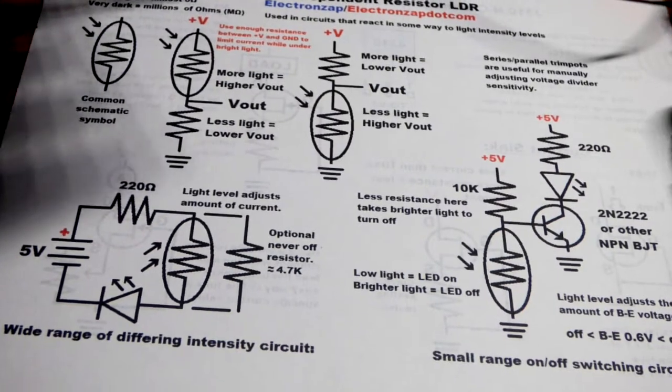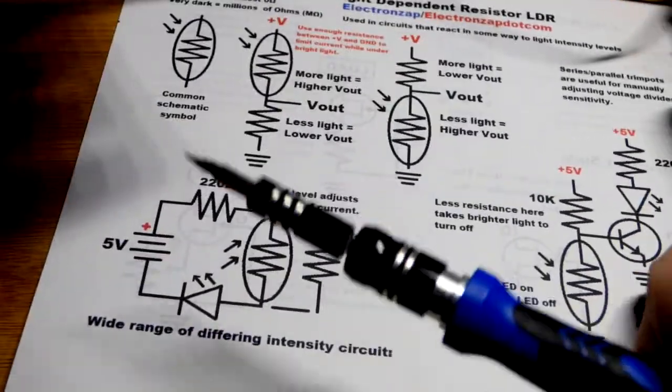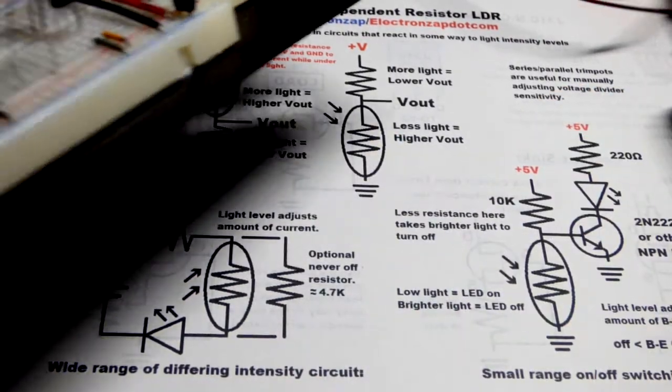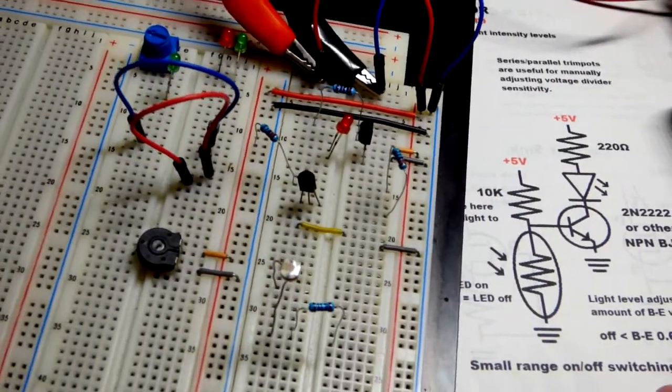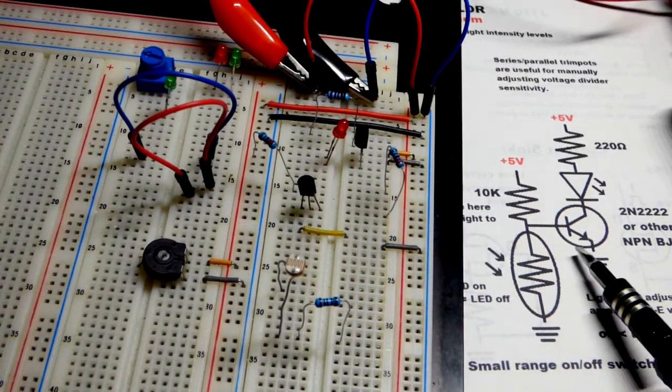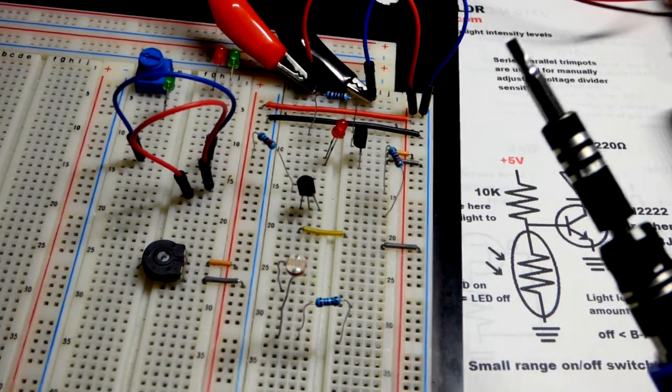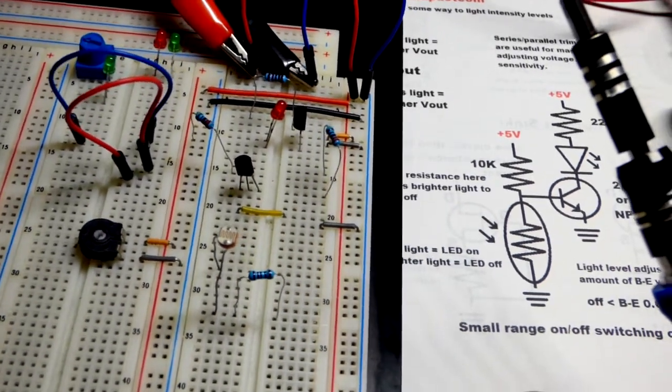Now in the last video, we looked at these different light-dependent resistor circuits and measured the light-dependent resistor on its own, its resistance depending on how much light fell on it. This video, we're going to use the light-dependent resistor to control a bipolar junction transistor switch.